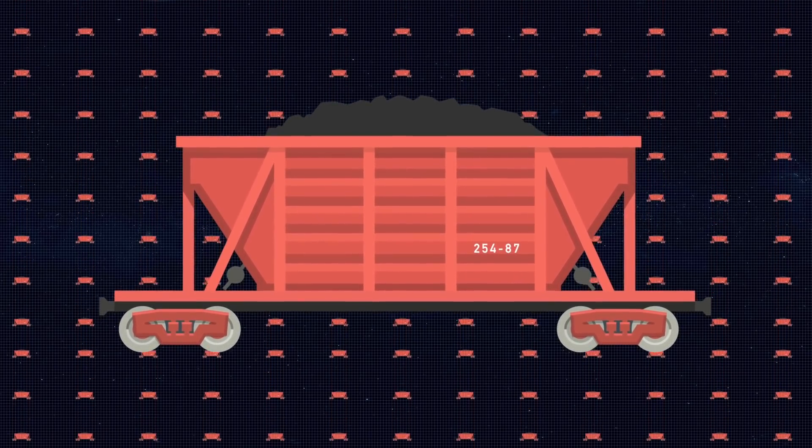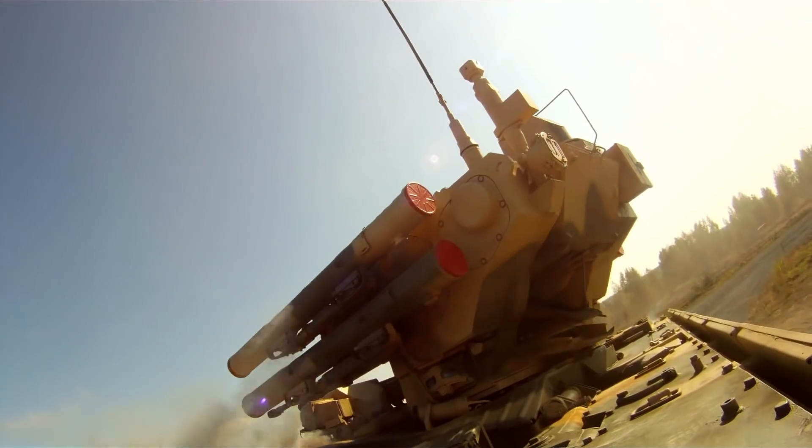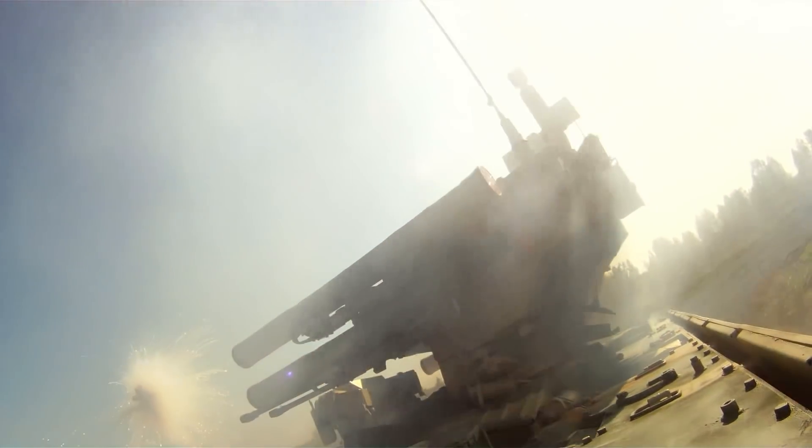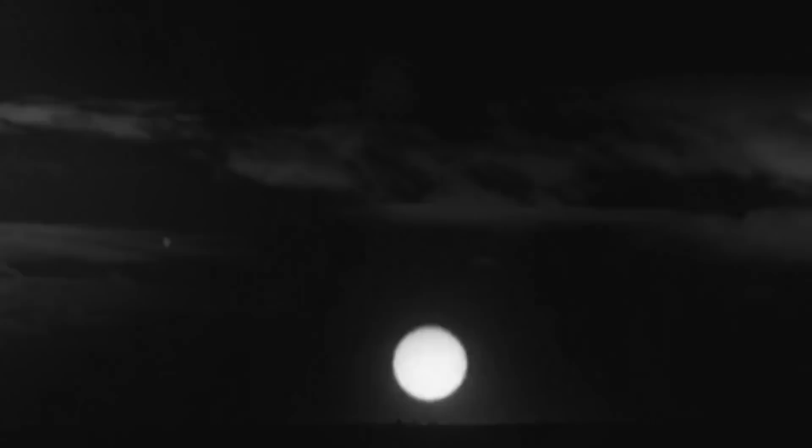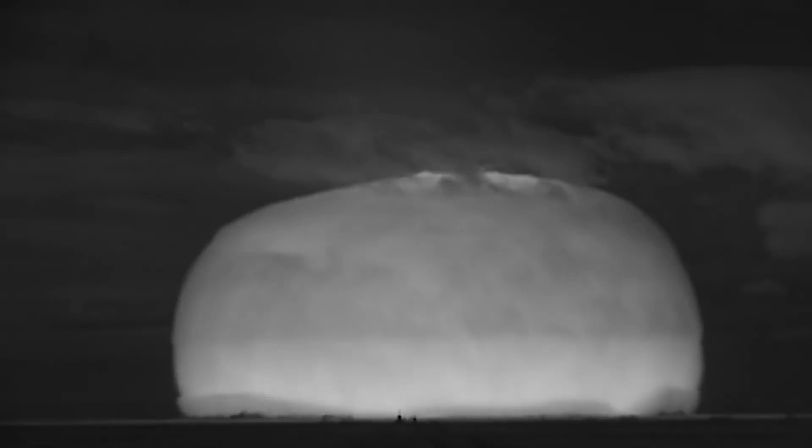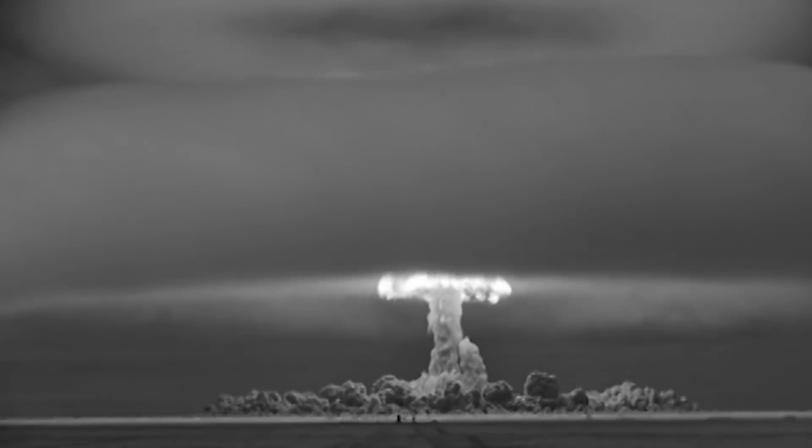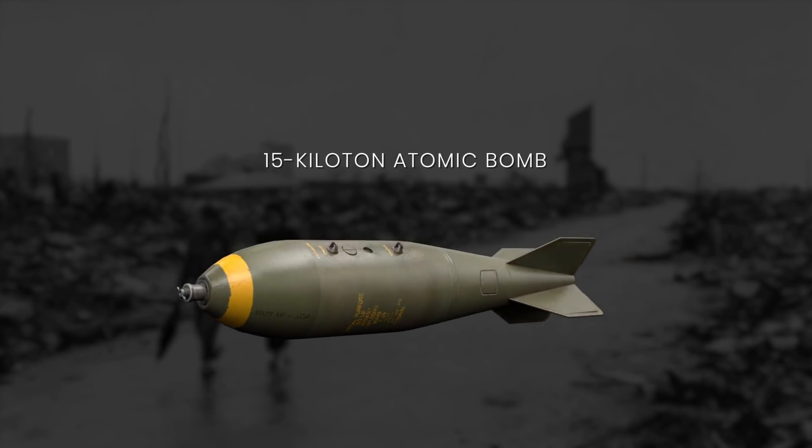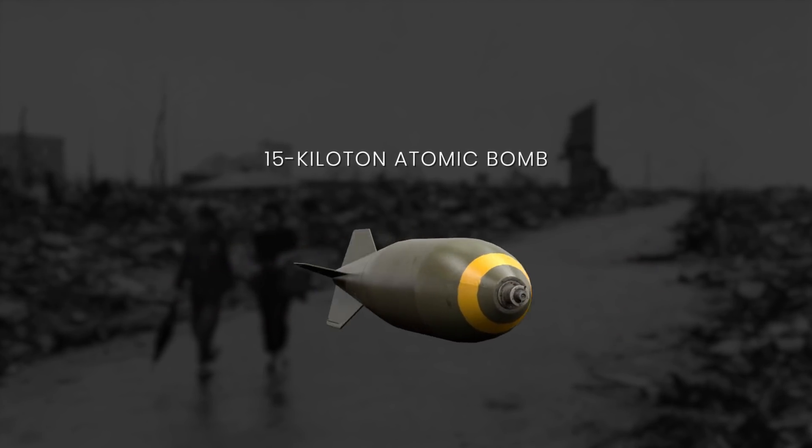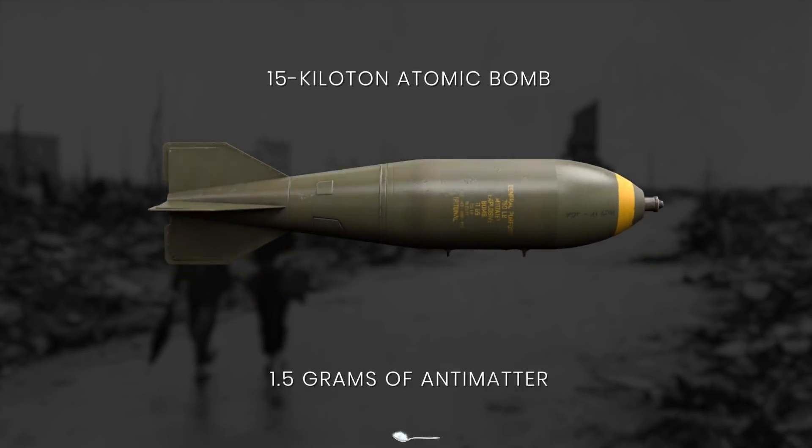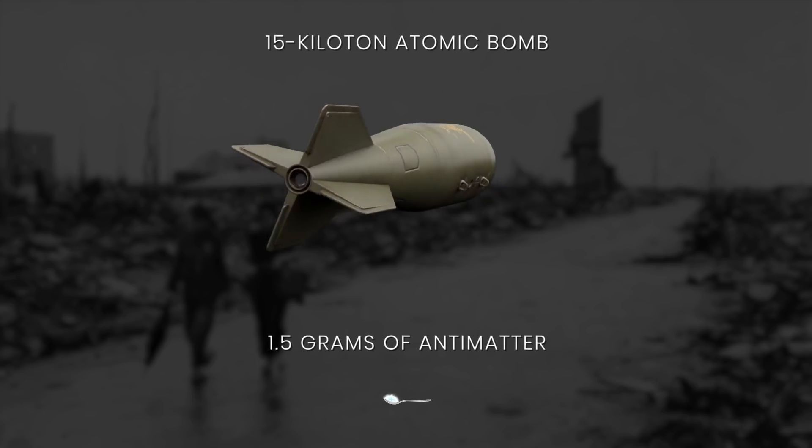A peaceful option, so to speak. And the military prospects are no less grandiose. The annihilation of one gram of matter releases 100 trillion joules of energy. This is equivalent to detonating a 10-kiloton atomic bomb. Hiroshima was destroyed by a 15-kiloton atomic bomb, for what it would only take 1.5 grams of antimatter.